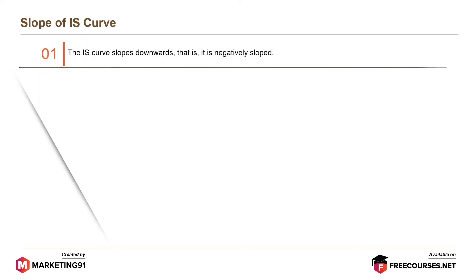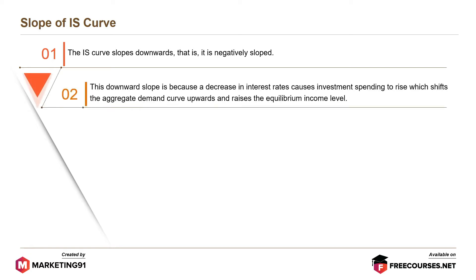The IS curve slopes downwards, i.e., it is negatively sloped. This downward slope is because a decrease in interest rate causes investment spending to rise, which shifts the aggregate demand curve upwards and raises the equilibrium income level.